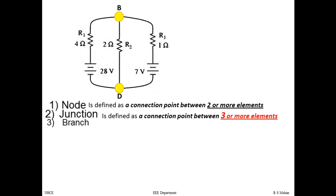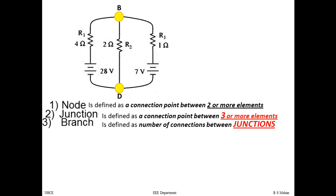The third element is a branch. A branch is defined as the number of paths or connections between junctions. We have two junctions here, so between junctions B and D, how many paths are there? One can observe there are three paths. We have named the corresponding currents I1, I2, and I3. But why are the currents assumed to flow from B to D and not D to B?